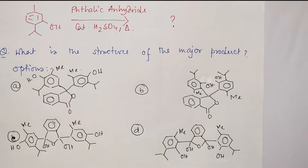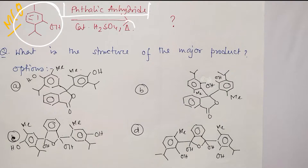Hello students, I am Dr. Tanmoy Vishash. I welcome you all to my channel, Chemistry: The Mystery of Molecules. Today we will discuss an MCQ about a phenolic derivative — an alkyl-substituted phenol in the presence of phthalic anhydride and catalytic sulfuric acid with some heat. What major product is produced? This is today's question, and four options are provided.